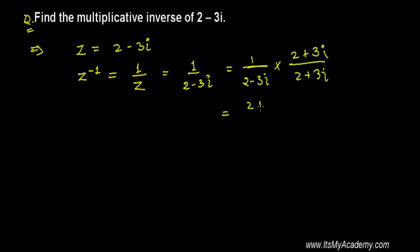Now further it is 2 plus 3i divided by a minus b times a plus b. So this is the formula of a square minus b square, which equals a minus b times a plus b. So it's going to be now 2 square minus 3i whole square.